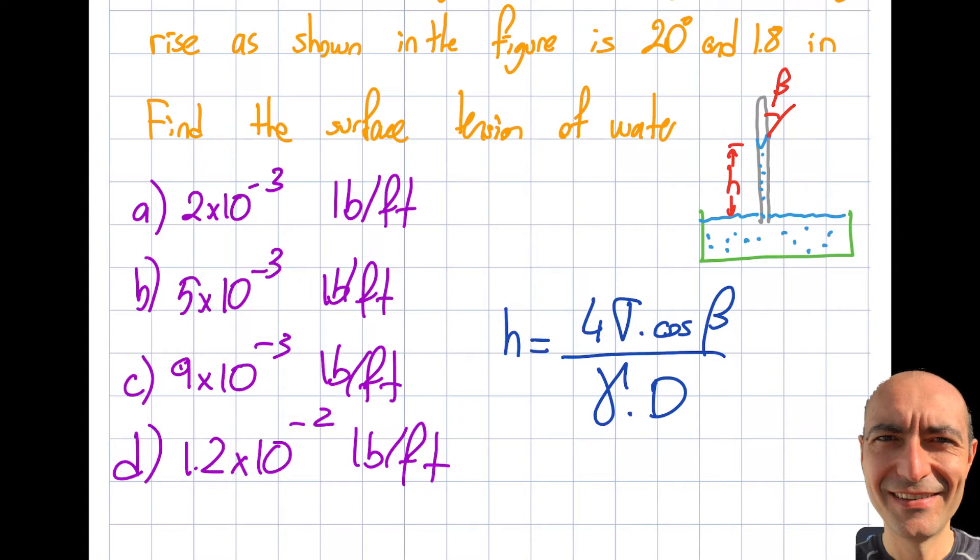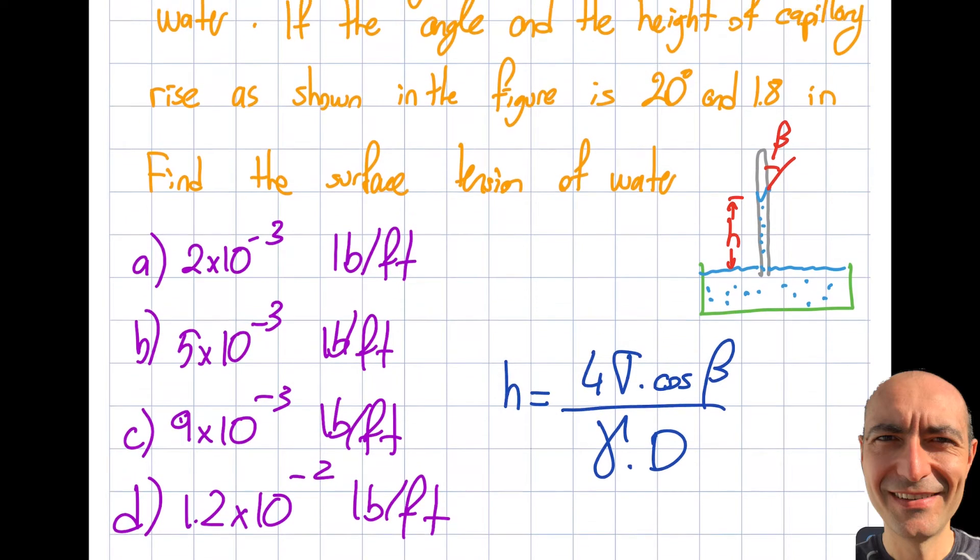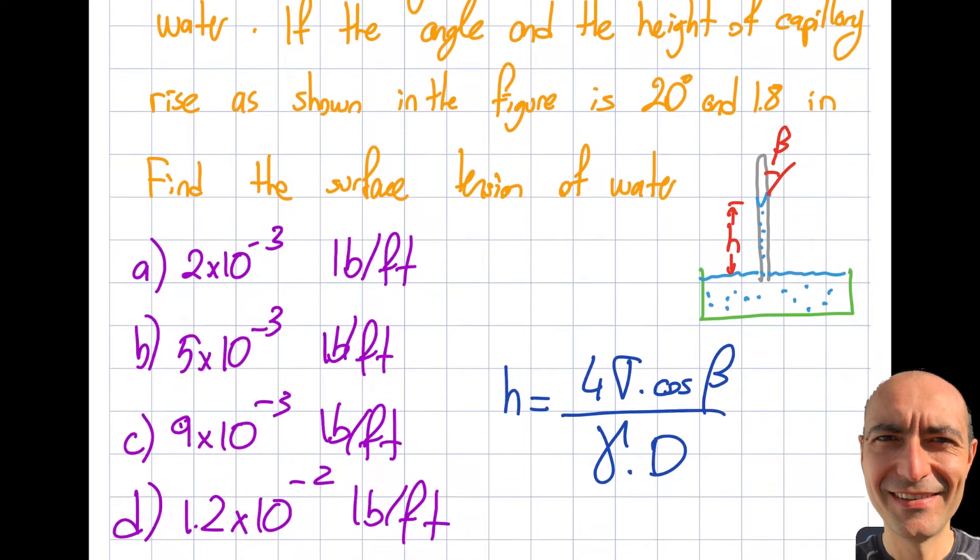So now let's assess what I know and what I don't know. The height is given as 1.8 inches, so that's fine. So let's write it over here. This is 1.8 inches. 4 is just a number. This is the question mark. Beta is 20 degrees.